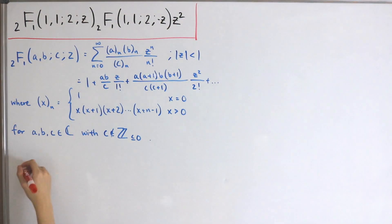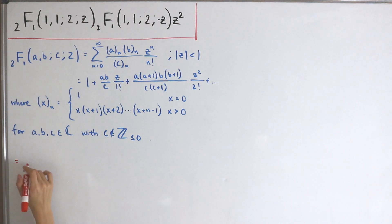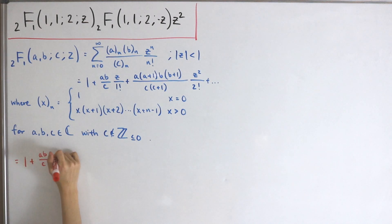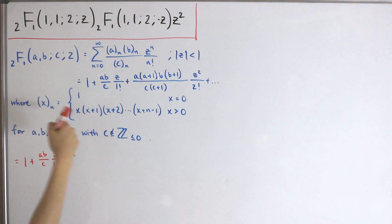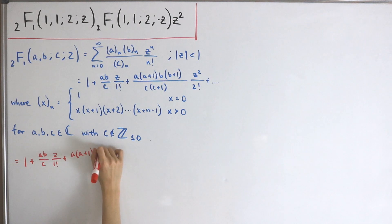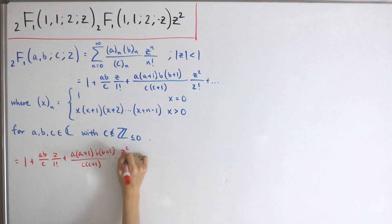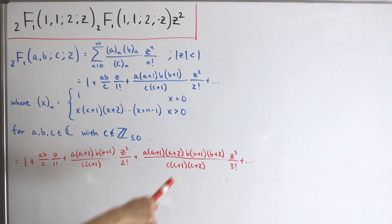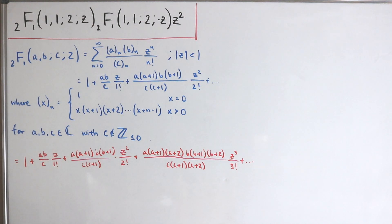So let's find the closed form of the expansion. The ordinary hypergeometric function expands as: 1 plus (a·b)/c times z divided by 1 factorial, then plus using the rising factorial — a(a+1) times b(b+1) divided by c(c+1) — times z squared divided by 2 factorial, and so on. I'll write a couple more terms and then continue with the analysis.